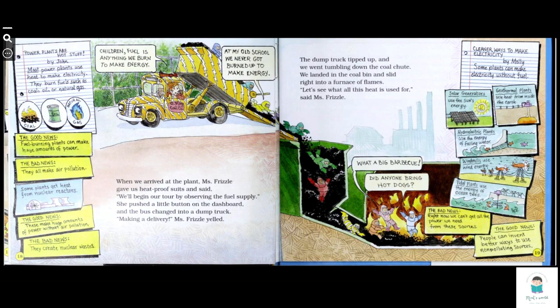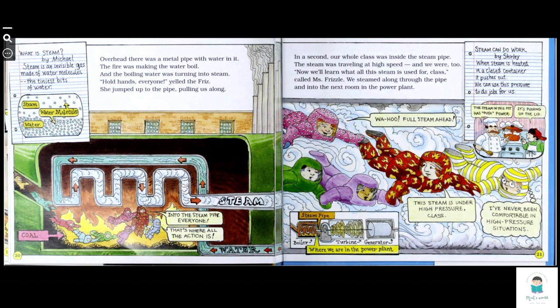Cleaner ways to make electricity: some plants can make electricity without fuel. Solar generators use sun's energy. Geothermal plants use heat from inside the earth. Hydroelectric plants use energy of falling water. Windmills use wind energy. Tidal plants use the energy of the ocean tides. The bad news: right now we can't get all the power we need from these sources. The good news: people can invent better ways to use non-polluting sources.